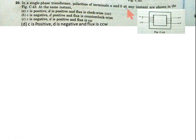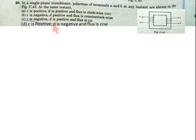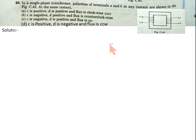Now come to Question 20. In a single-phase transformer, the polarity of terminals A and P at any instant are shown in figure C.43. At the same instant: option A: C is positive, D is positive, and flux is clockwise. Option B: C is negative, D is positive, and flux is counterclockwise. Option C: C is negative, D is positive, and flux is clockwise. Option D: C is positive, D is negative, and flux is counterclockwise.